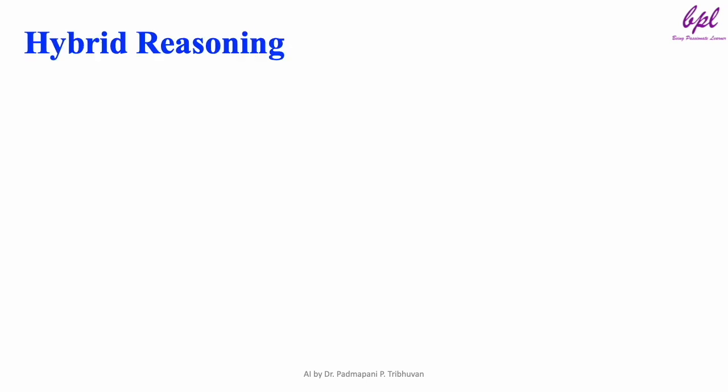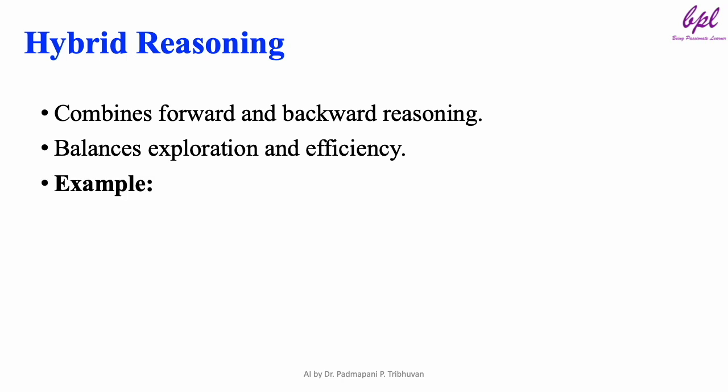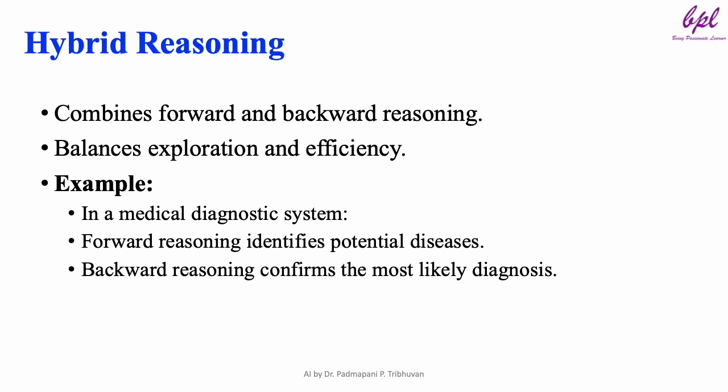Now, let's explore hybrid reasoning, which combines the strengths of forward and backward reasoning. For example, in a medical diagnostic system, forward reasoning identifies potential diseases based on symptoms, and backward reasoning narrows down and confirms the most likely diagnosis using additional evidence. This combination creates a balanced and effective framework for solving complex problems, making hybrid reasoning a game-changer in AI systems.